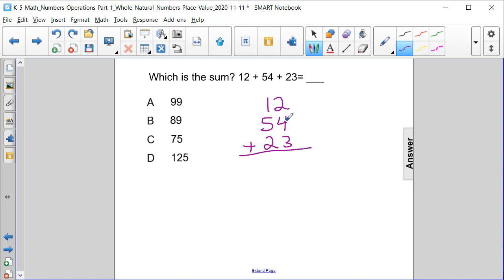2 plus 4 is 6, plus 3 more is 9. Then 1 plus 5 is 6, plus 2 more is 8. So our answer is 89, or answer choice B.